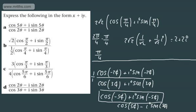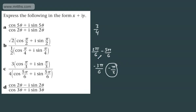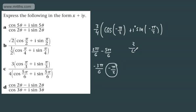Let's do this last one. We divide the moduli to get 3 over 4. Subtracting the arguments: putting pi by 3 into sixths gives 2 pi by 6, and we subtract minus 5 pi by 6, giving minus 3 pi by 6, which is minus pi by 2. So we can write 3 quarters times cosine of minus pi by 2 plus i sine of minus pi by 2. Cosine of minus pi by 2 is 0, and sine of minus pi by 2 is minus 1, so we end up with minus 3 over 4i.